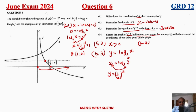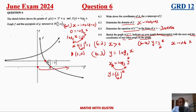Question 6.4 asks us to sketch the graph of f inverse, indicating intercepts with the axes and the coordinates of one other point. The function is y = (½)^x. There is no x-intercept — it does not exist, not applicable. For the y-intercept, set x = 0: y = (½)^0 = 1. So the y-intercept is (0, 1).